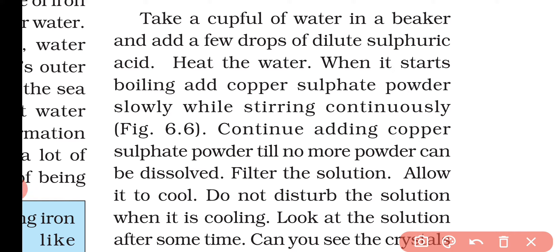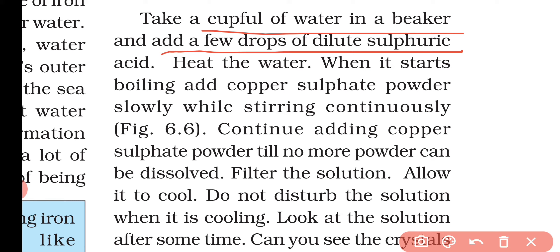To make copper sulfate crystals, take a cup full of water in a beaker and add a few drops of dilute sulfuric acid — note that it must be dilute, not concentrated. Start heating it, and when it begins boiling, add copper sulfate powder slowly while stirring continuously.